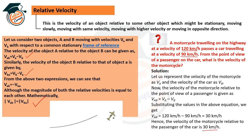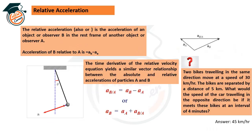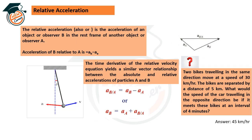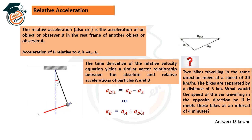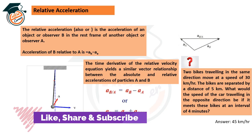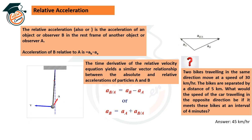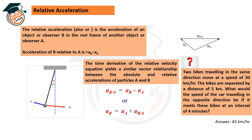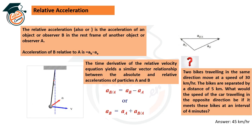Relative acceleration is the acceleration of an object or observer in the rest frame of another object. The acceleration of B relative to A is aB − aA. Similarly, the time derivative of relative velocity equals relative acceleration. So acceleration of B with respect to A equals acceleration of B minus acceleration of A.